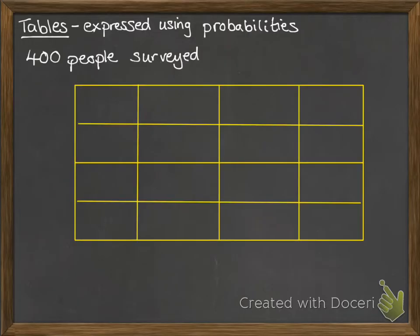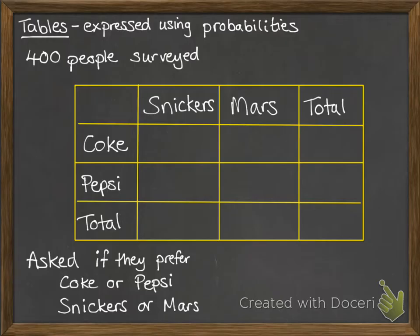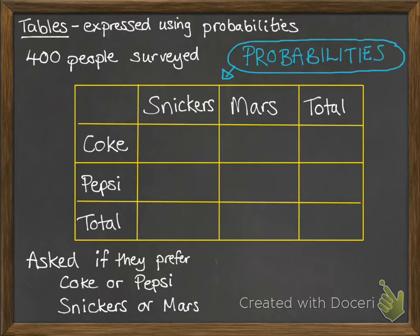So we could have something like this, where you've got 400 people surveyed. They're asked if they prefer Coke or Pepsi, and then whether they prefer Snickers or Mars, and we get this table with our totals column. Since we are talking about probabilities, our totals have to add up to 1, or if you were doing it in percentages, it would add up to 100%. So we're going to put the probabilities into the boxes, not the number of people.